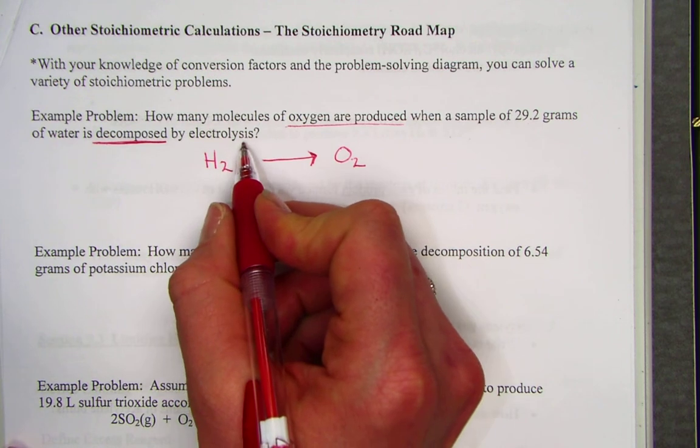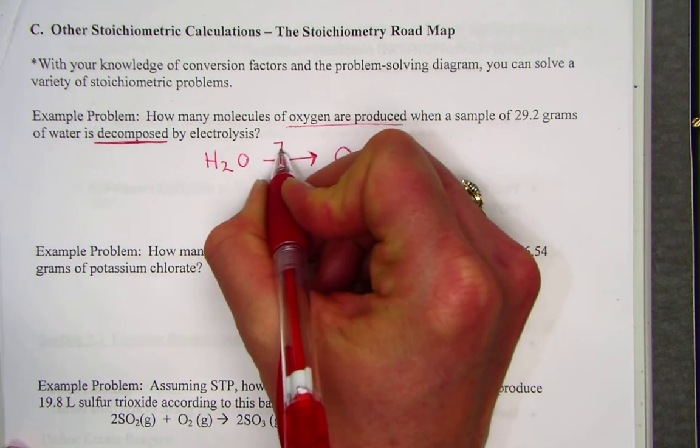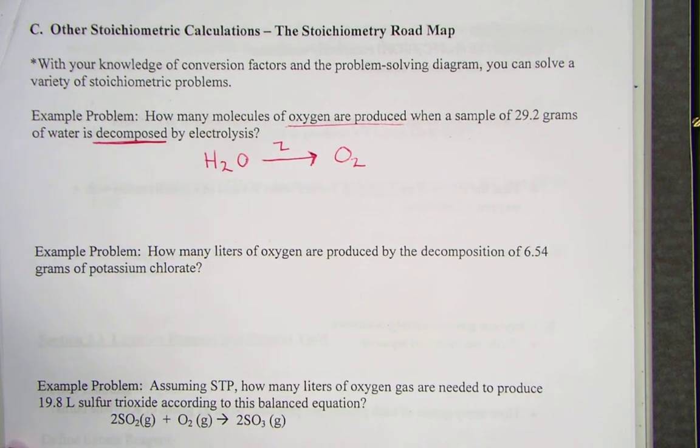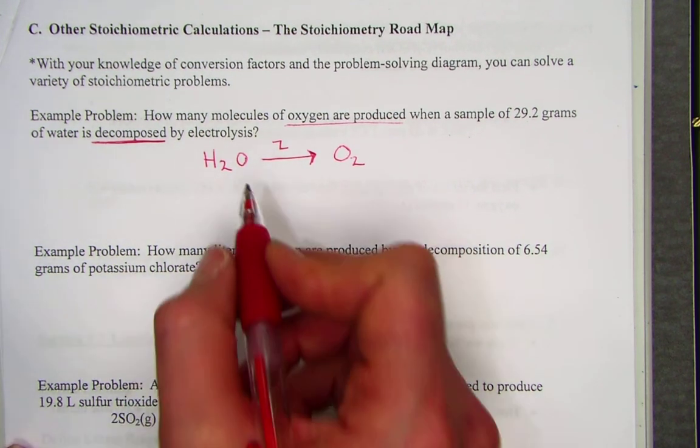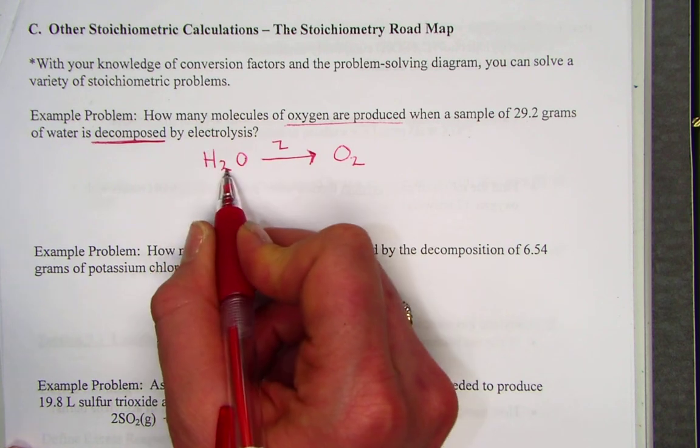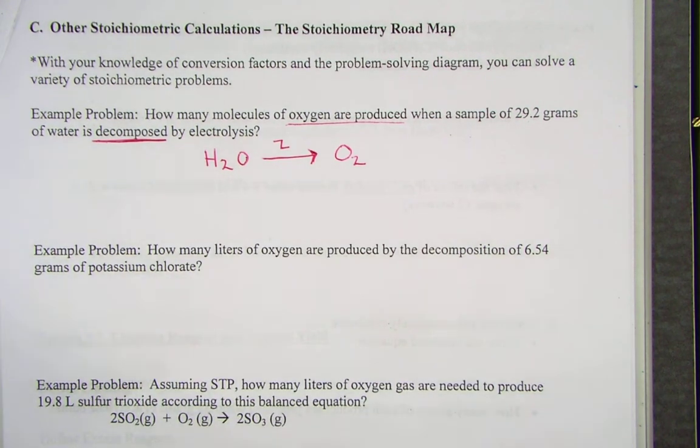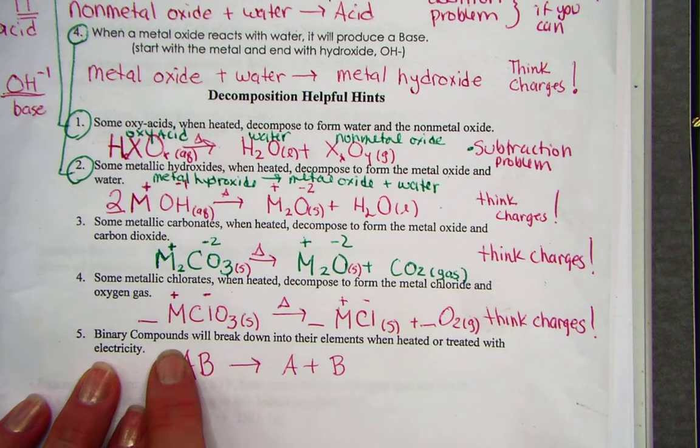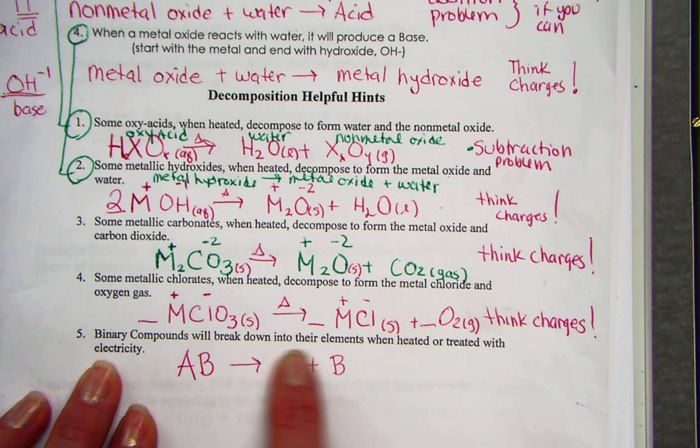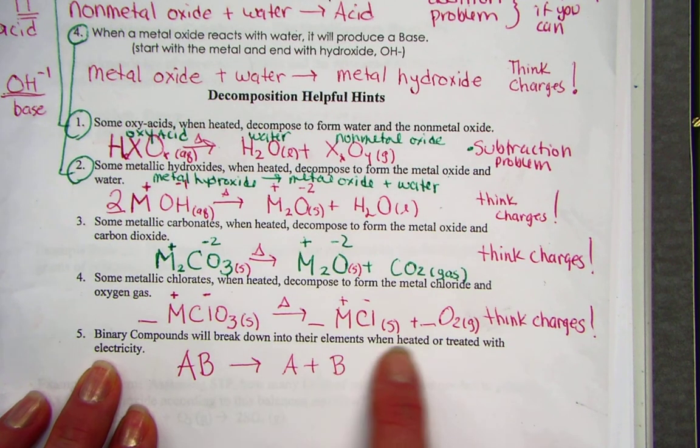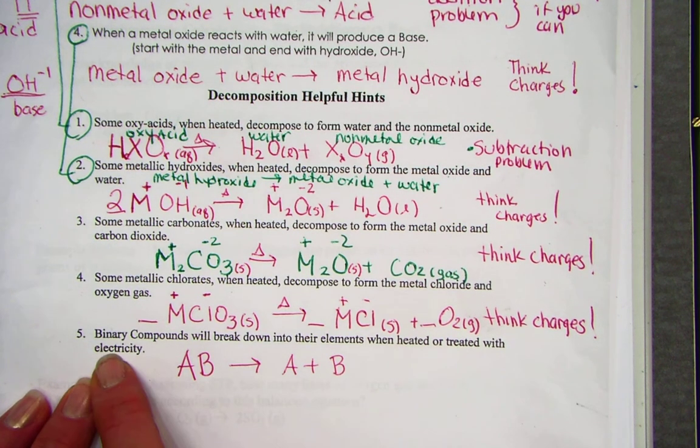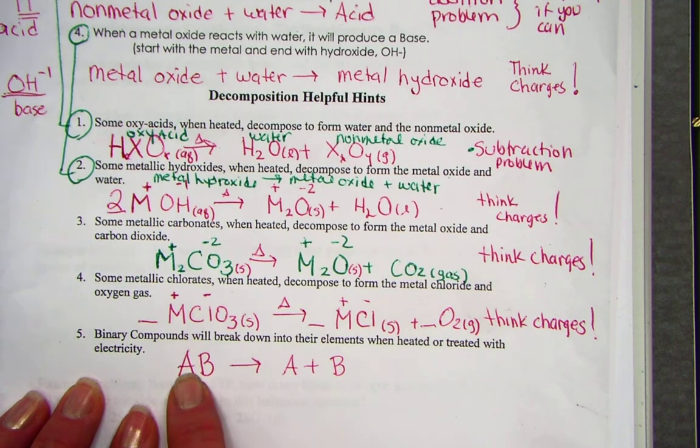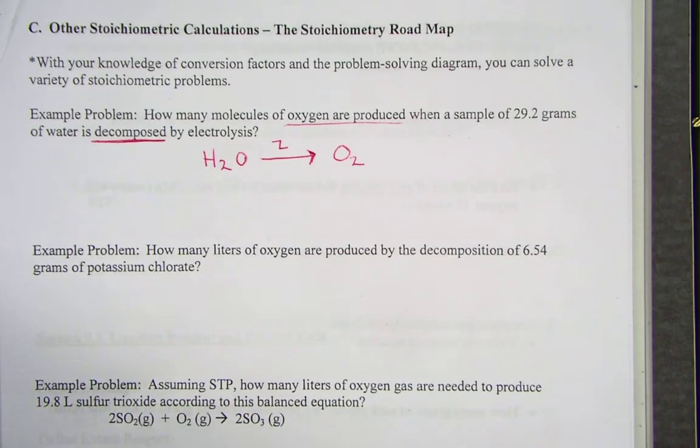The term electrolysis just simply means to zap it with electricity. Often you'll see that written out as a little lightning bolt. That's the best I could do for that. If this binary compound is decomposing, our helpful hint suggests binary compounds simply break down into their elements when heated or treated with electricity. Water is a binary compound. It's made of two elements, H's and O's.